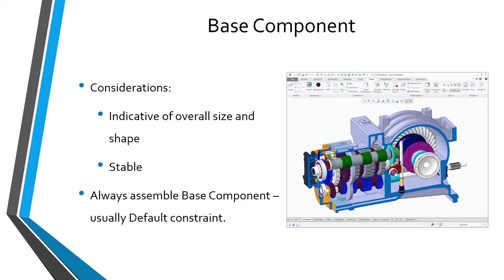When choosing your base component, there are a couple of considerations. If you can, select as the base component something that is indicative of the overall size and shape of the model, especially something you can mount all other components on. For example, if you are designing an automobile, this might be the frame. Second, you want to choose something that's going to be very stable, because changes are propagated through parent-child relationships. If you have to make a lot of changes to the base component, those changes will propagate to other parts and assemblies, potentially resulting in regeneration failures.